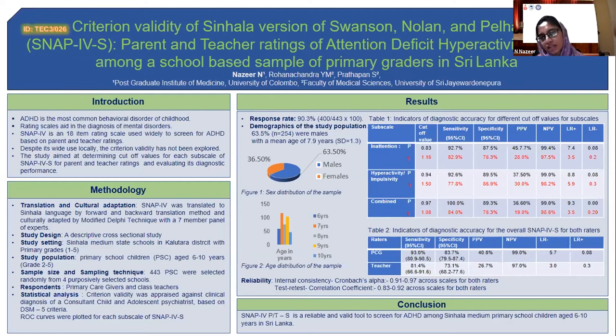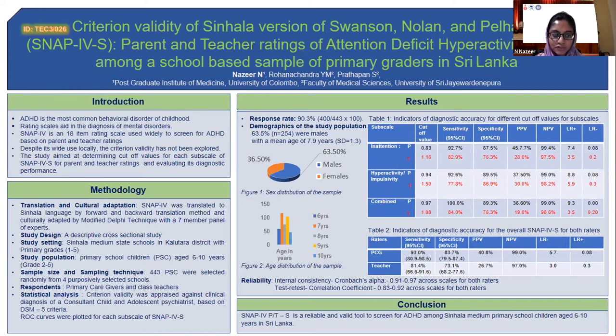The criterion validity was appraised against the clinical diagnosis of a consultant child and adolescent psychiatrist based on the DSM-5 criteria. ROC curves were plotted for each of the three subscales of the SNAP-4.